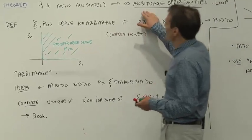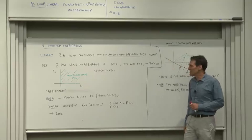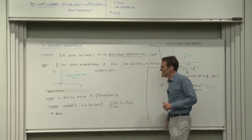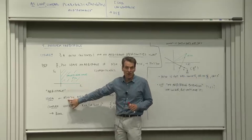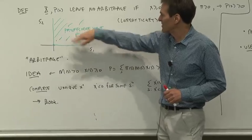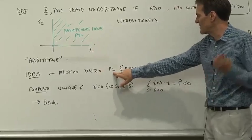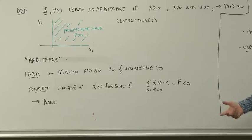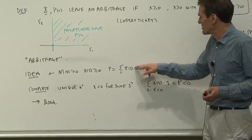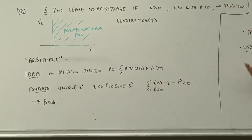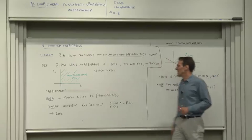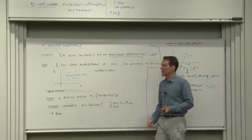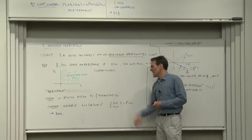Now this theorem — what's the connection between arbitrage opportunities and positive discount factors? Let me explain the idea intuitively. Let's go the opposite direction, the easy one. Suppose that the discount factor is always positive and suppose we have payoffs that are always positive. Well, the price of those payoffs is a sum of positive probabilities, positive discount factors, and positive payoffs — it's got to be greater than zero. In order to get a price less than zero, we would need a discount factor less than zero. If we rule out negative prices, we have positive discount factors. So that gives you the connection between positive discount factors, positive contingent claims prices, and the absence of arbitrage.